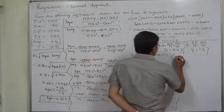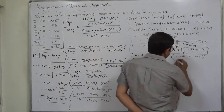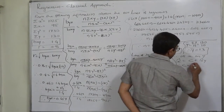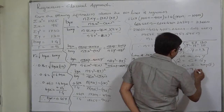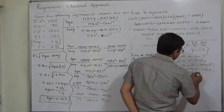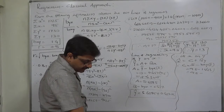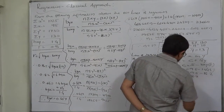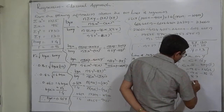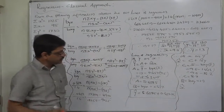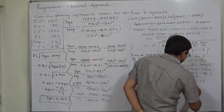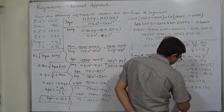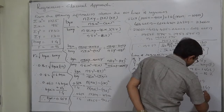Now the line of regression of x on y. Standard form: x-hat = c + bxy·y, where b stands for bxy. We find c = x bar − bxy · y bar = 9.5 − 1.4 × 13 = 9.5 − 18.2 = −8.7. So the equation of the line of regression of x on y is: x = 1.4y − 8.7.